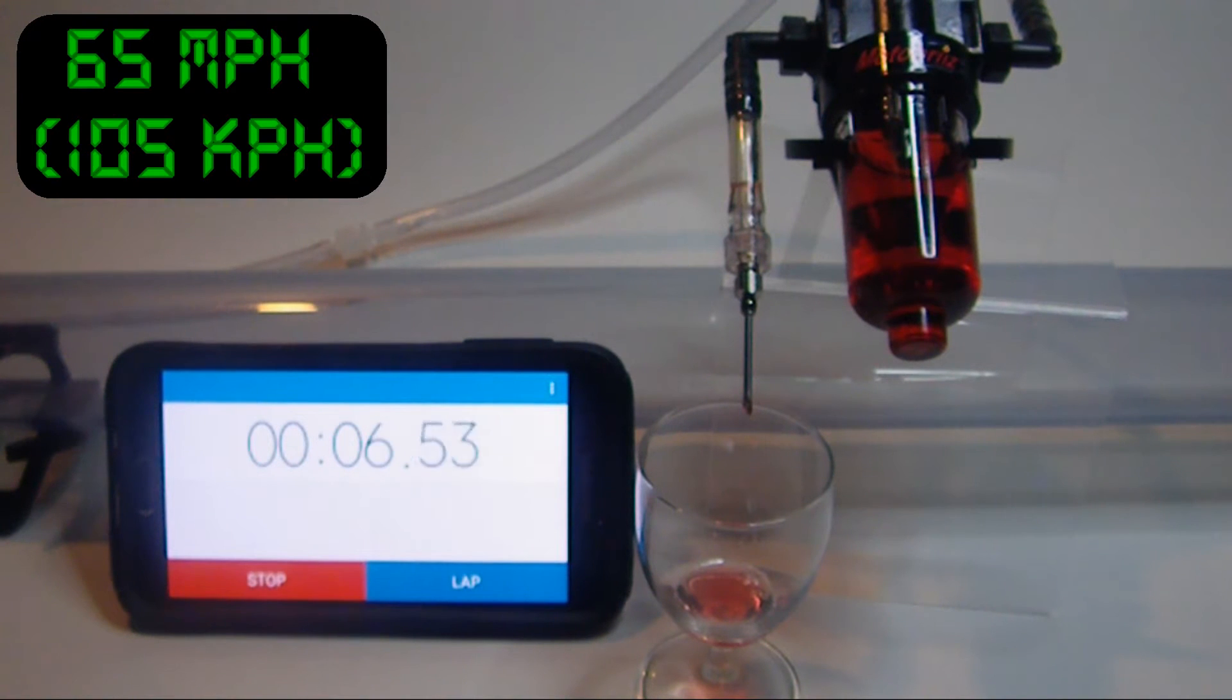The second run is at 65 miles per hour or 105 kilometers per hour. Even though the pressure is increased due to the higher speed, you will notice that the discharge tube still does not fill with oil.